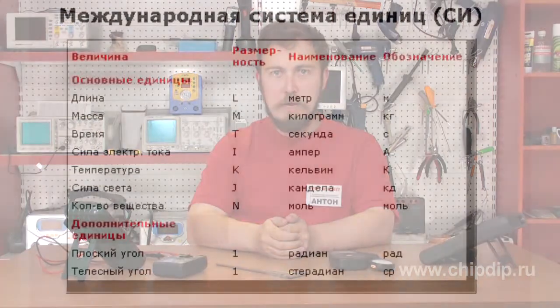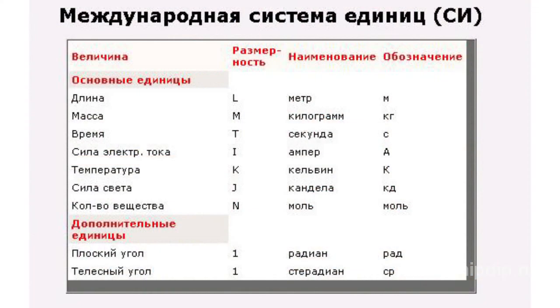SI system units used in electrical engineering and electronics: length — meter; mass — kilogram; time — second; electric current strength — ampere; thermodynamic temperature — kelvin; plane angle — radian; solid angle — steradian; amount of substance — mole.